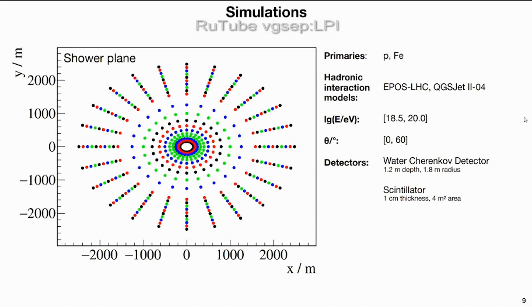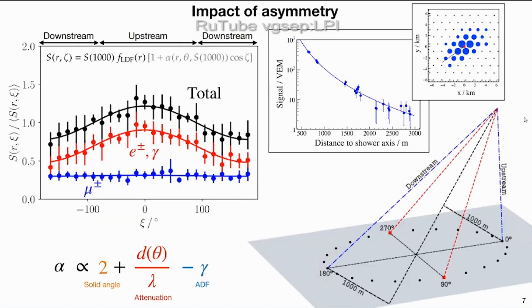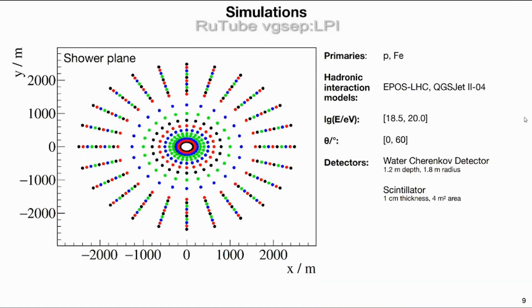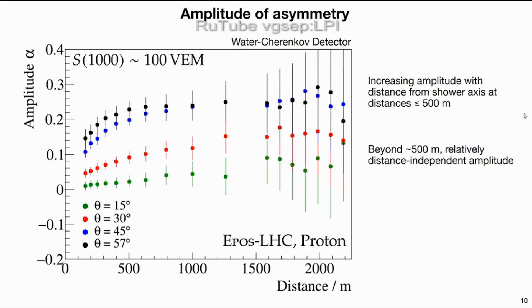To build a model and parameterization we simulated a number of dense rings at different distances from the shower axis — stations equally spaced in azimuthal angle in the shower plane. We fit a simple cosine, which falls out of the conical model as the first-order approximation for the asymmetry, and it fits rather well. We ran simulations for a few different hadronic interaction models, at the highest energies, up to 60 degrees zenith angle, and for two different detector types, since sensitivity to different shower components depends on the detector.